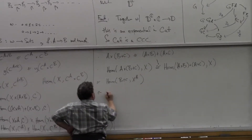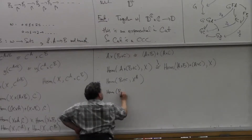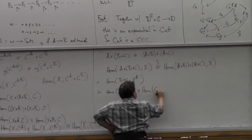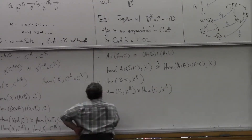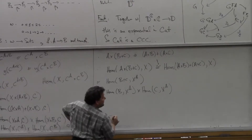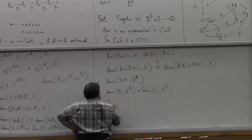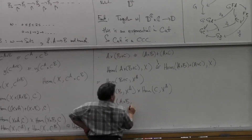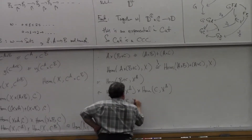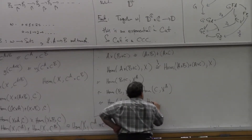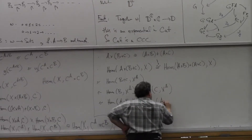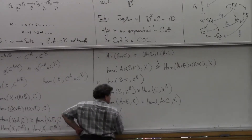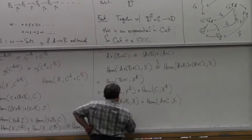And now I pull the coproduct out on the left. Then I just put them back down: A cross B, x. And now I can push the coproduct back in on the left.